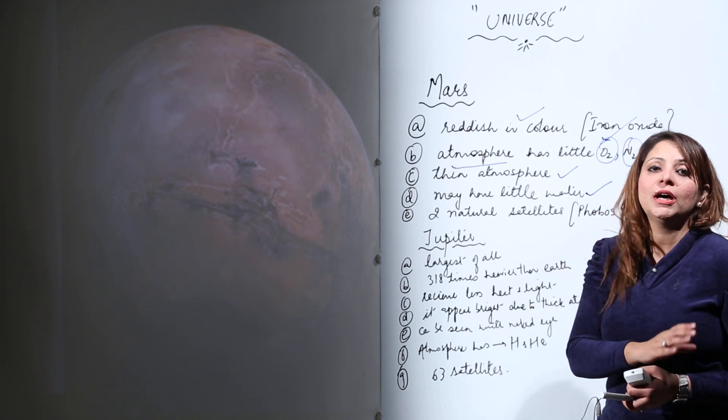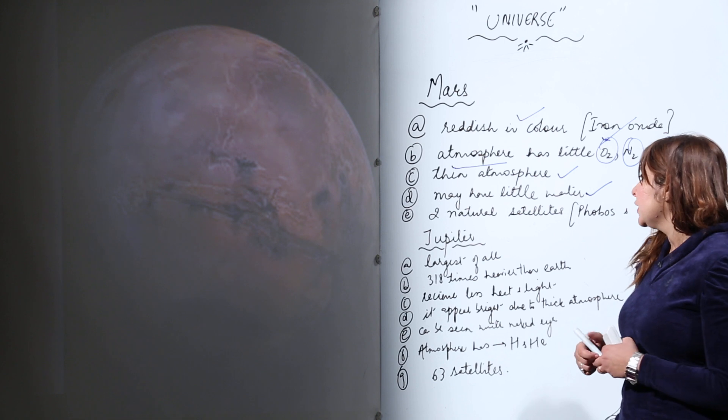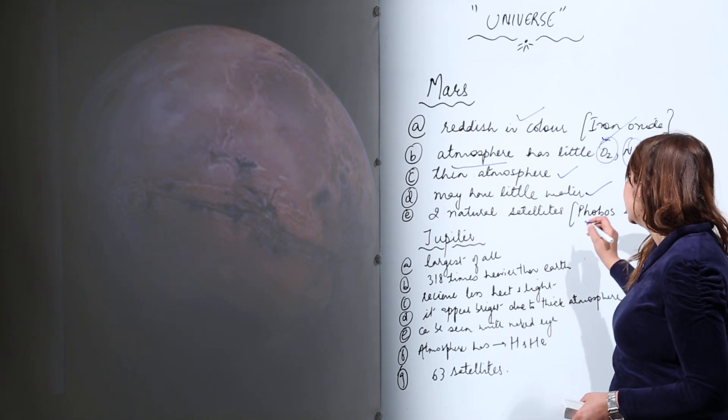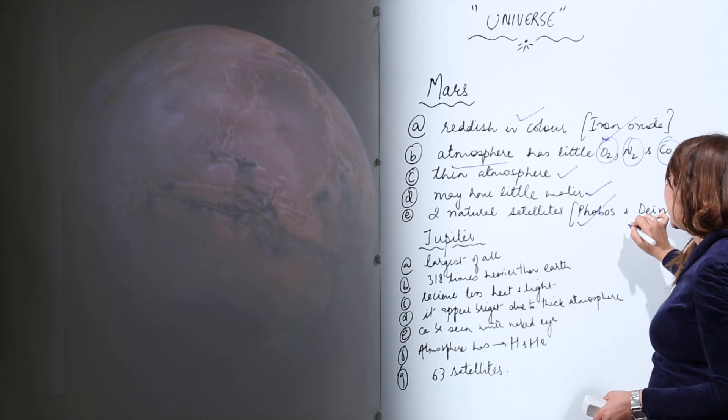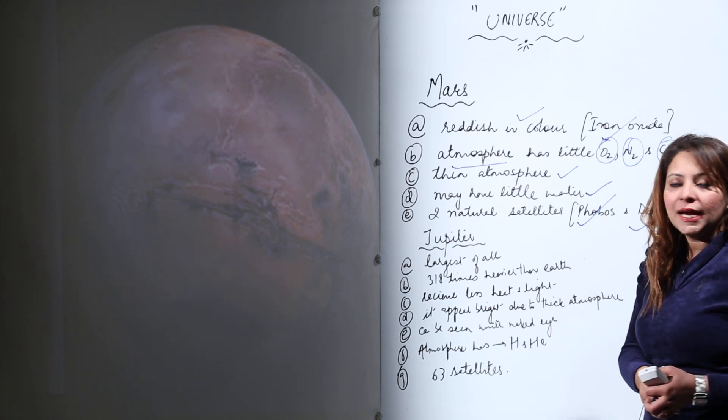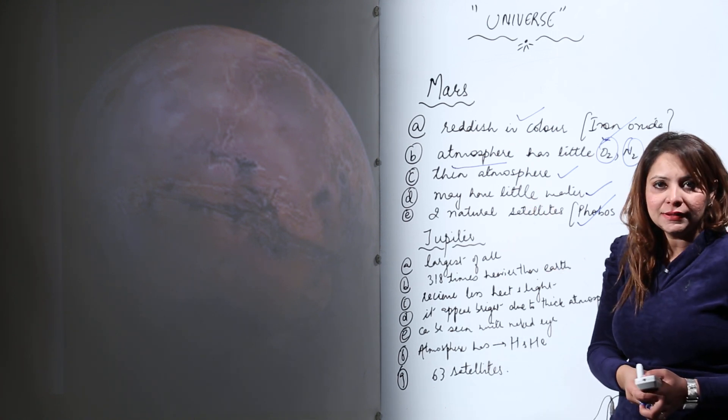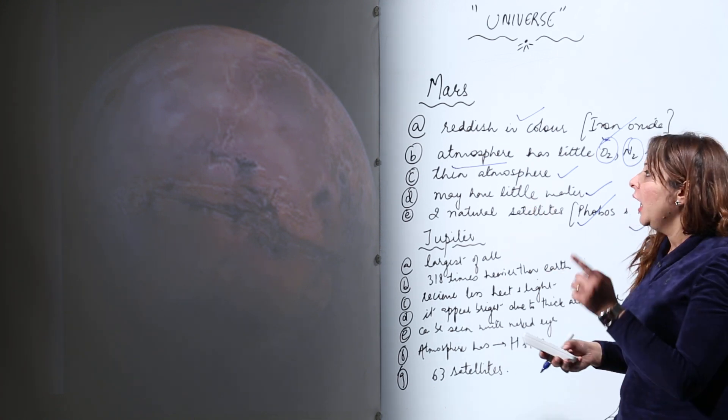As it contains atmosphere, water, and iron oxide, there's a chance that it has life too. It has two natural satellites called Phobos and Deimos. These are the satellites of the red planet, Mars.